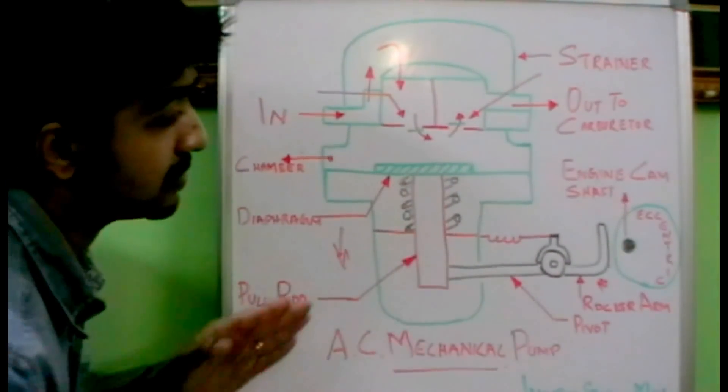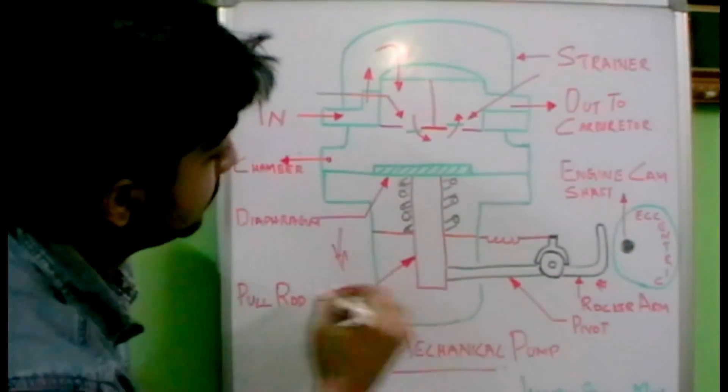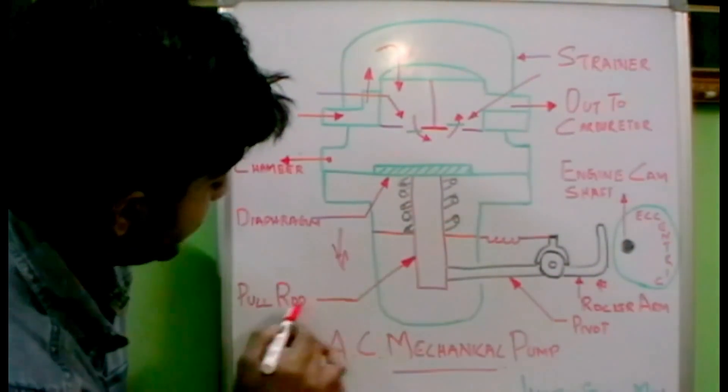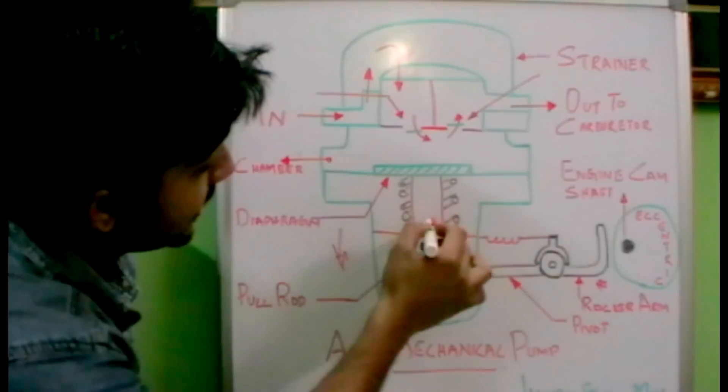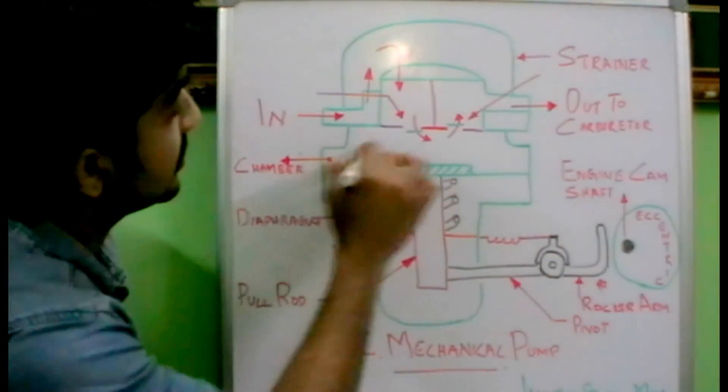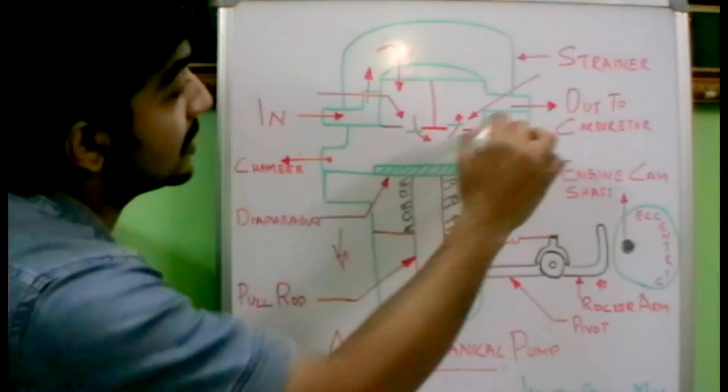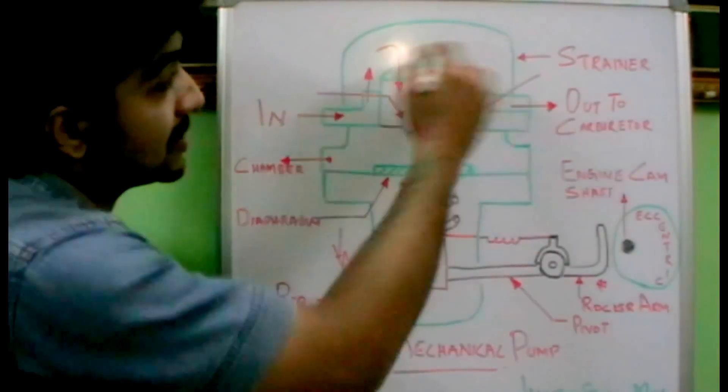Let's identify the components. We have the rocker arm and this is a spring over here. There's a pull rod, this is the pull rod which is connected towards the diaphragm. This is the diaphragm through this particular spring. This is the chamber where the fuel is sucked in and delivered through here. This is the inlet and this is the outlet towards the carburetor, and this is a strainer.